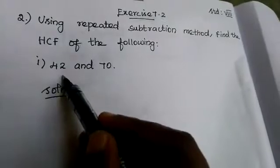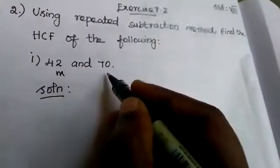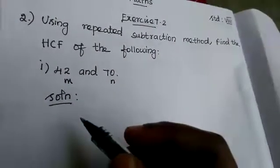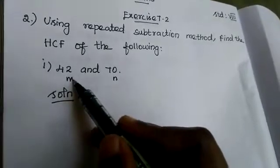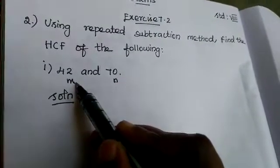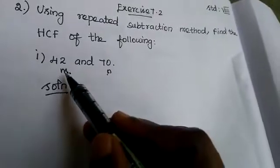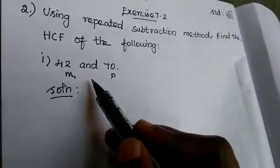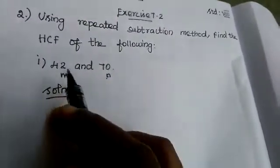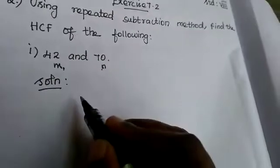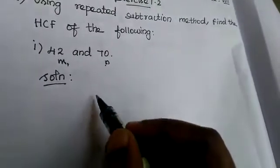Now we take this one as M and this one as N. Up to which process we want to do? We want to do when this reaches M equal to N. So we can say if M equal to N, that is the HCF of 42 and 70. Now what is the first step? We want to identify which number is greater. Here which one is greater?